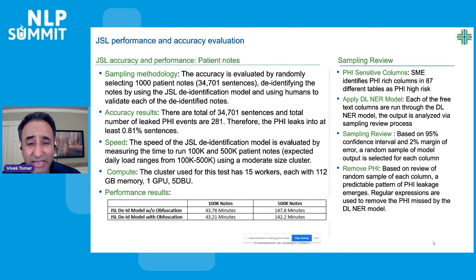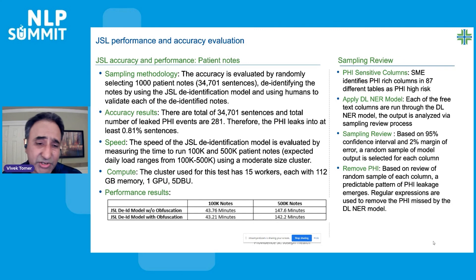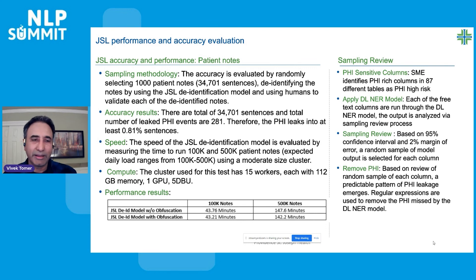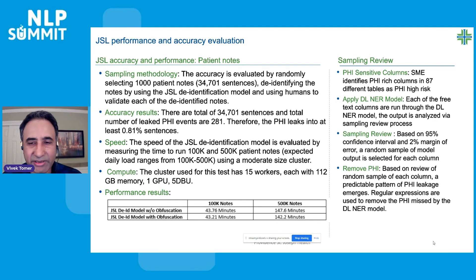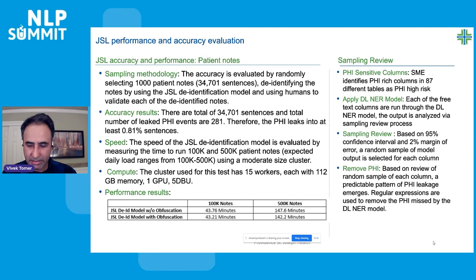This is the overall de-identification process we are following, and it's an iterative process. Our goal is to remove every possible PHI from our dataset. As you go higher in accuracy, it becomes increasingly difficult to gain more performance — but we will keep trying. John Snow Labs has been really helpful throughout this process. That's my presentation — thank you.